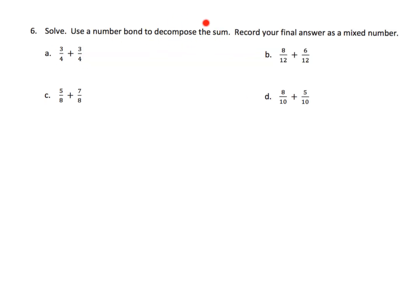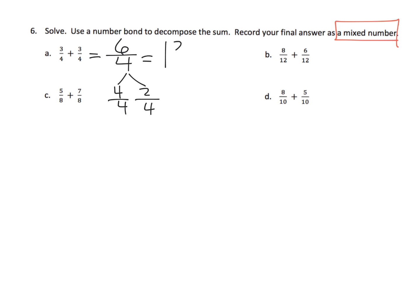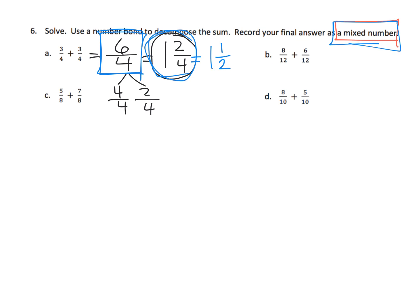Now we continue adding, but the answer will be a fraction larger than one, so we decompose it and write it as a mixed number. For example, three-fourths plus three-fourths is six-fourths, and six-fourths is four-fourths plus two-fourths, so the answer is one and two-fourths. Parents and teachers, students don't have to simplify to one and a half — we're perfectly happy with one and two-fourths. We would not accept stopping at six-fourths, because the intention is to convert to a mixed number.